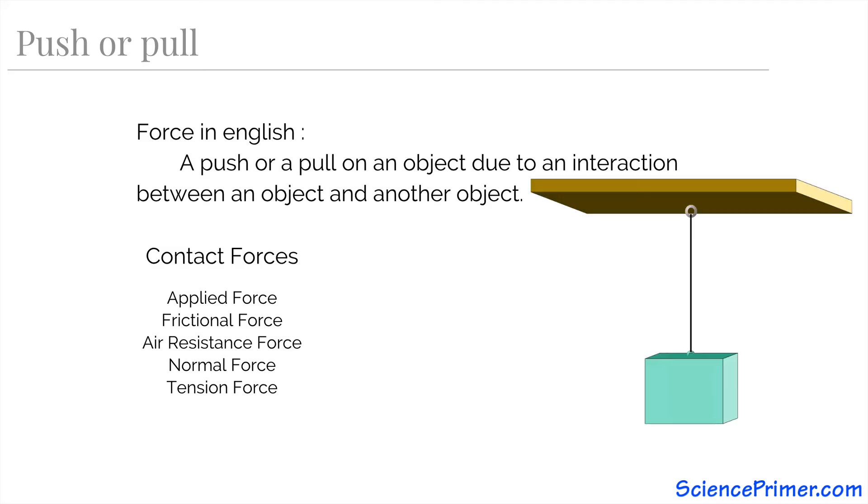Next is tension force. For this, consider a block hanging from a rope. As gravity pulls down on the block, the force of that pull is transmitted through the rope to the hook it is hung from. This force transmitted through the rope is tension force.